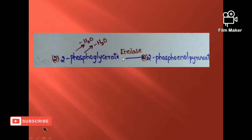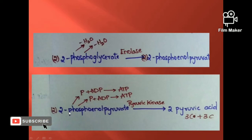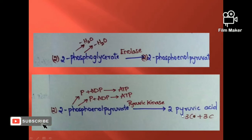Next, 2-phosphoglycerate is converted to 2 phosphoenolpyruvate. Then phosphoenolpyruvate is converted to pyruvate, which is a 3-carbon molecule. These are the final steps of the glycolysis pathway.